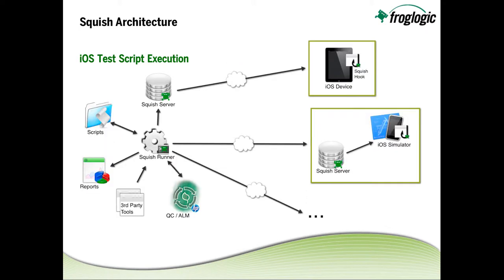For iOS test script execution, the Squish runner uses scripts and connects to the Squish server. The Squish server can reside with the Squish runner or on a remote machine, for example when working with an iOS simulator. When working with an iOS device, the Squish server will connect via a network connection to the iOS device to play back scripts. One or more scripts can be run in parallel, running against multiple iOS simulators or devices.